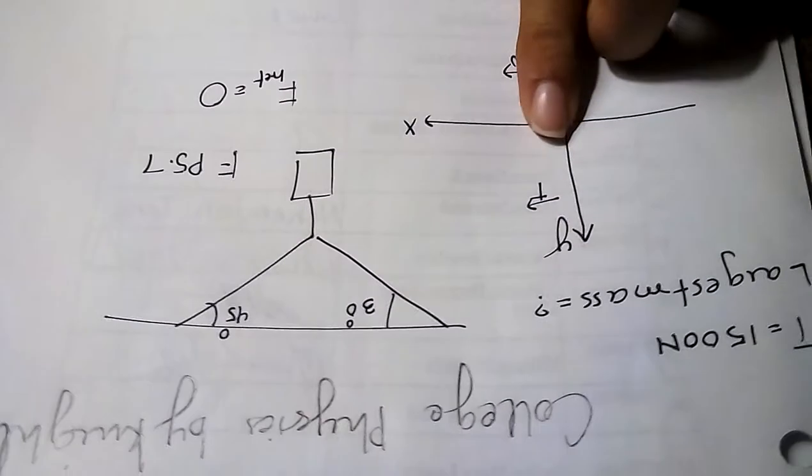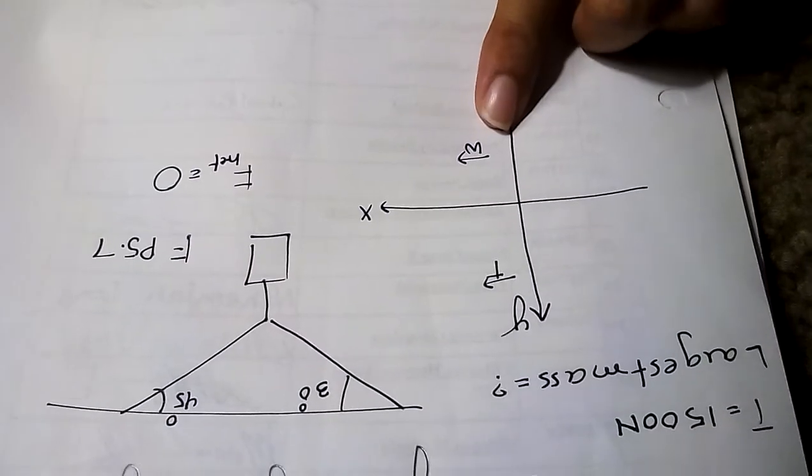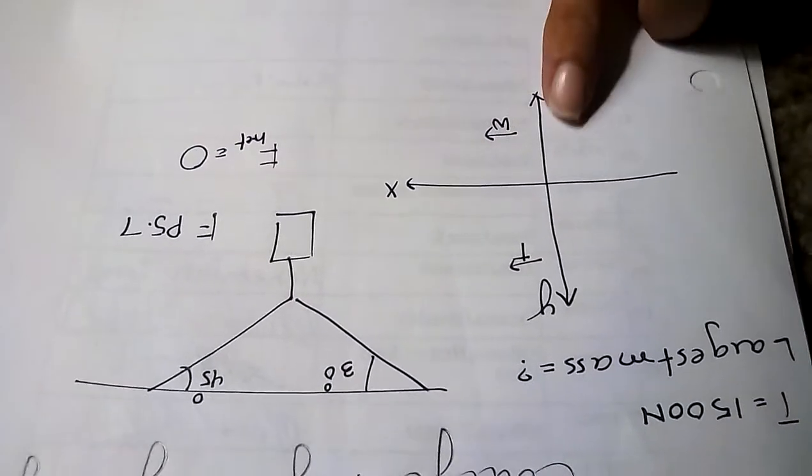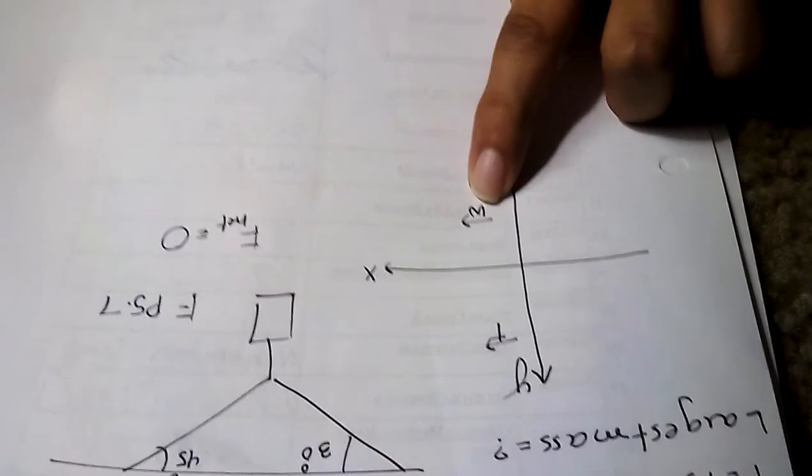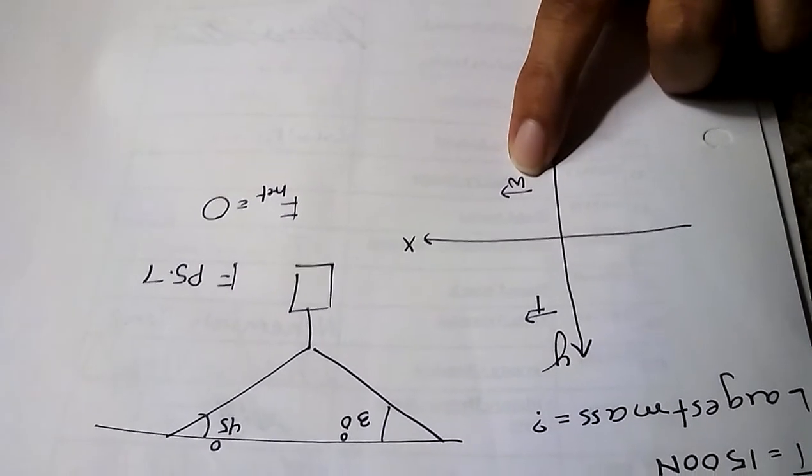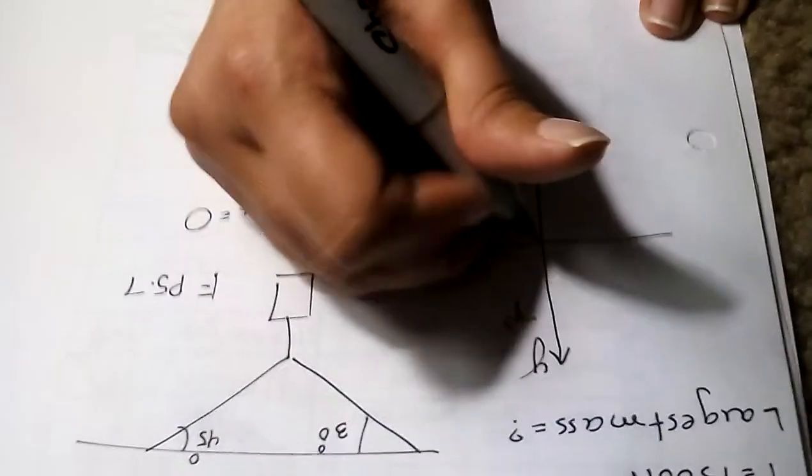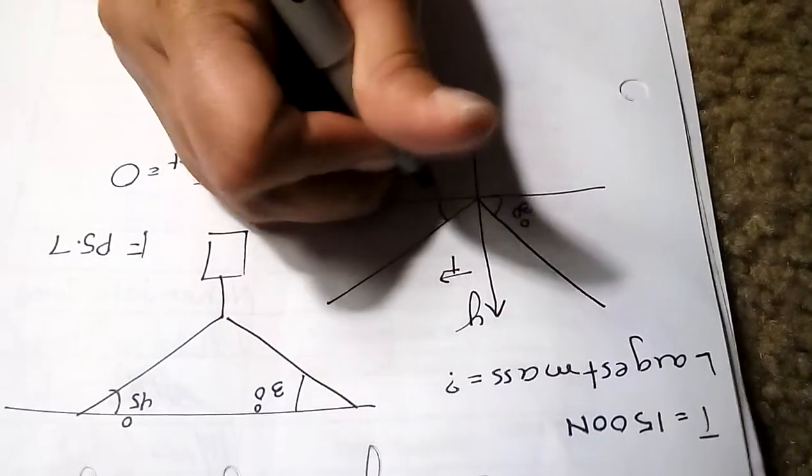The direction of the tension force is always in the direction of the motion. Since the crate is pulling the mass upward, the tension will be upward. The direction of the weight should always be down because gravity pulls everything towards itself.